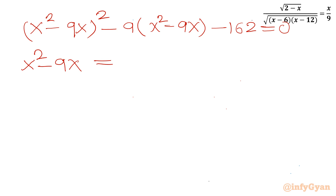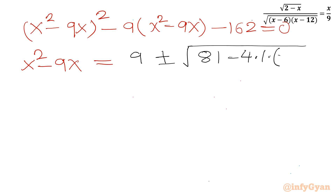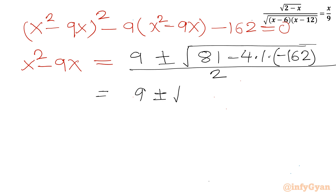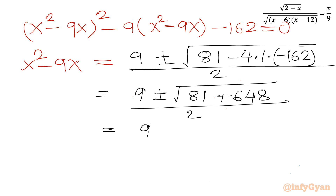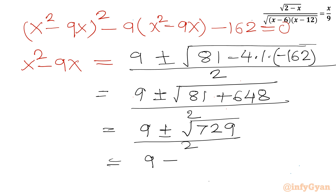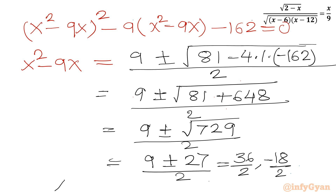That simplifies to 9 plus or minus square root of 729, divided by 2. Since square root of 729 is 27, we get (9 plus 27) over 2 equals 18, or (9 minus 27) over 2 equals minus 9. So x squared minus 9x equals 18 or x squared minus 9x equals minus 9.